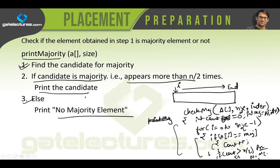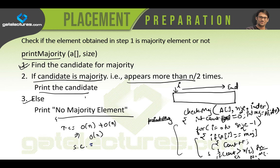Finding the majority element using the Boyer-Moore voting algorithm is pretty straightforward, with favorable time and space complexity. The time complexity is O(n) to find the candidate plus O(n) to check it, giving overall O(n) time. The space complexity is O(1) since no extra space is used. We'll also write the actual program for this algorithm. Next, we'll look at another solution using hash tables, or hashing.